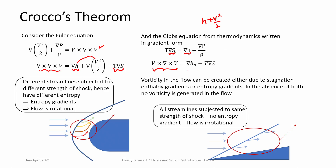If we consider adiabatic flow, h₀ is constant, so the gradient of h₀ vanishes. Therefore, if there are any gradients of entropy — i.e., if it is not an isentropic flow — then there is vorticity. Conversely, if it is an isentropic flow and entropy is constant everywhere, then there is no vorticity. So isentropic flows are essentially irrotational flows.